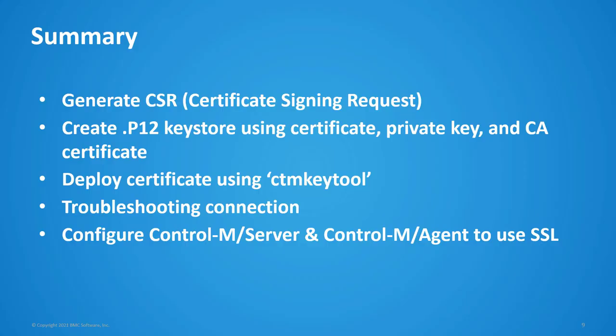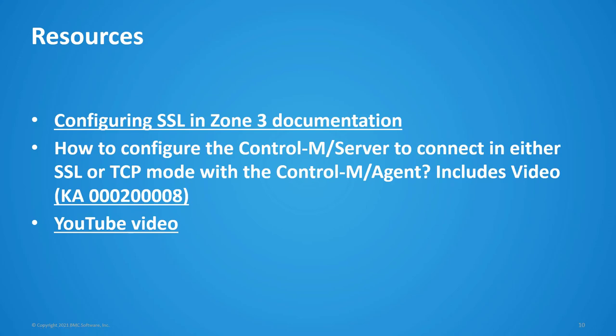Here is a recap of the steps done during the demo. We generated a certificate signing request. We created the P12 key store and deployed it using the CTM key tool utility on both the CTM server and the CTM agent. We validated the bidirectional connection using the PLC_server and PLC_client utilities. Finally, we configured the CTM server and CTM agent to communicate over SSL. Here are some useful resources: the link to the SSL Zone 3 documentation, and a link to a knowledge article with step-by-step instructions and a video walking through this procedure.